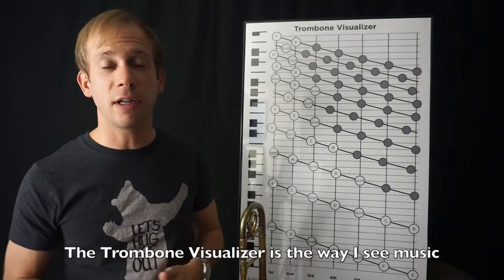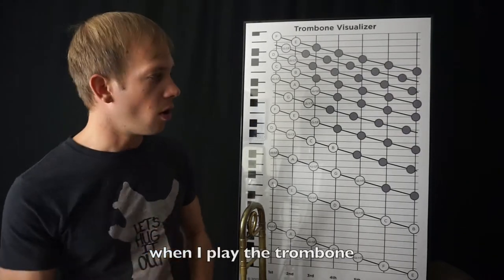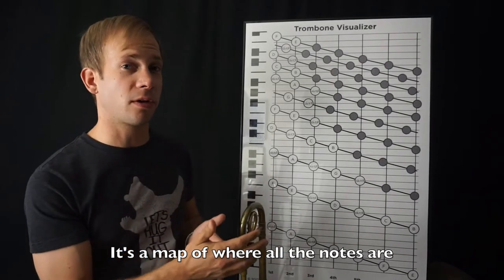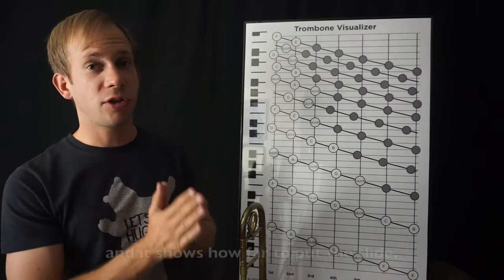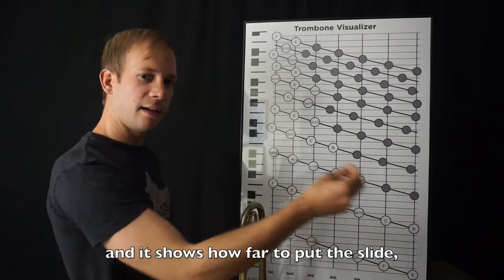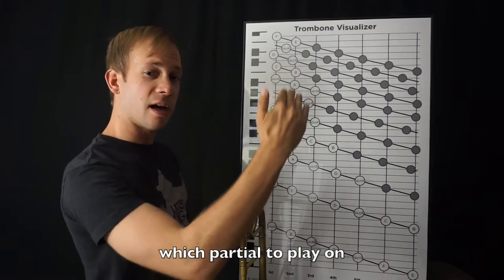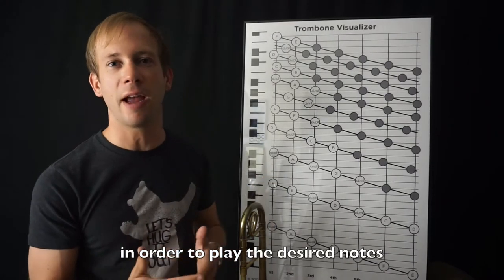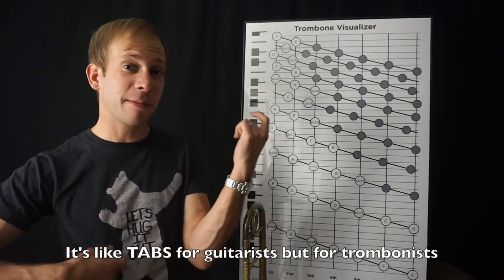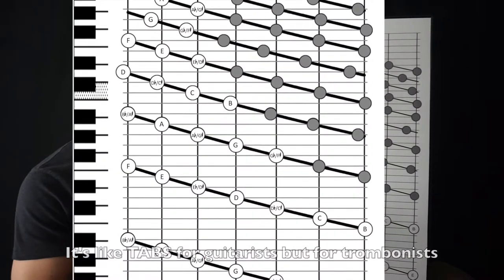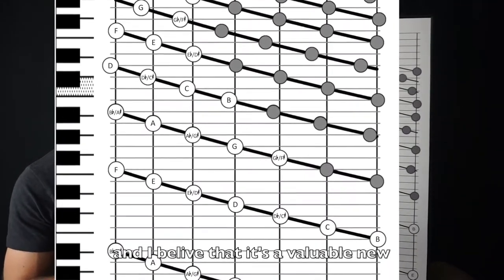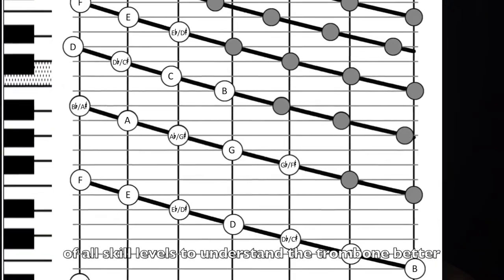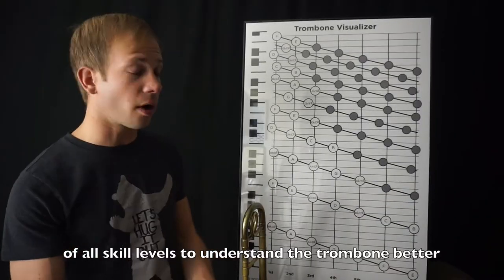The trombone visualizer is the way I see music when I play the trombone. It's a map of where all the notes are on the trombone and it shows how far to put the slide, which partial to play on, and how much to adjust the embouchure in order to play the desired notes. It's like tabs for guitarists but for trombonists, and I believe it's a valuable new educational tool to help trombonists of all skill levels to understand the trombone better.